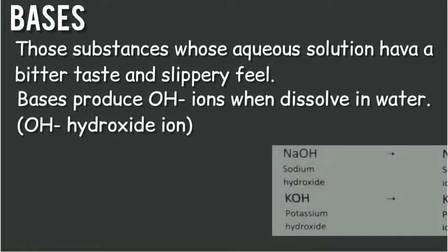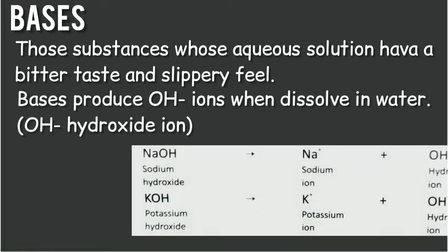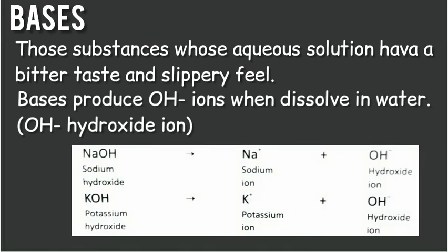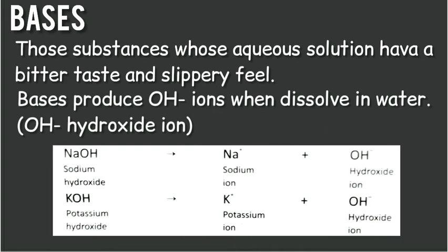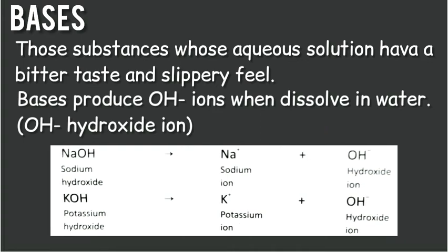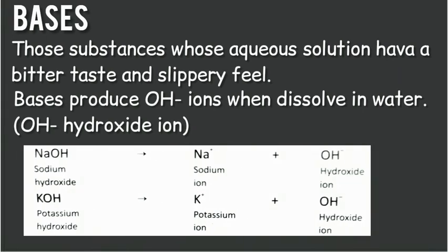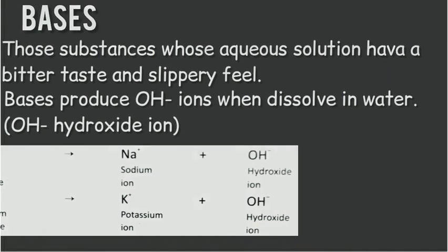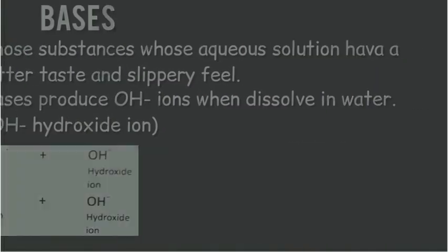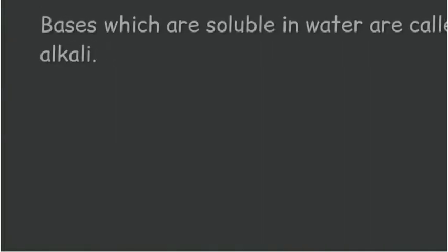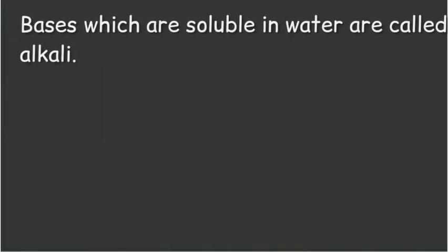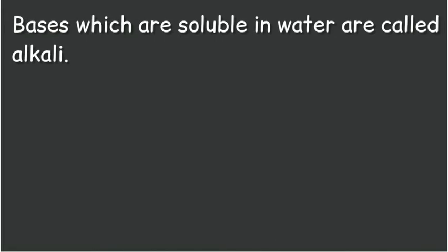For example, when sodium hydroxide is dissolved in water, it gives sodium ions and hydroxide ions. When potassium hydroxide is dissolved in water, it gives potassium and hydroxide ions. Bases which are soluble in water are called alkali.